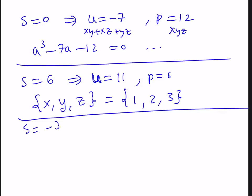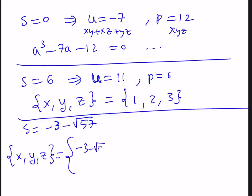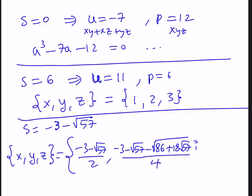For the radical cases, let's take S equals negative 3 minus the square root of 57. The three values of x, y, z include one real solution: negative 3 minus root 57 over 2, and then complex conjugate pairs. One complex solution is (negative 3 minus root 57 minus i times root(86 plus 18 root 57)) all over 4, and the other has a plus sign in front of the imaginary part.